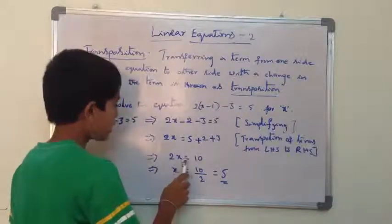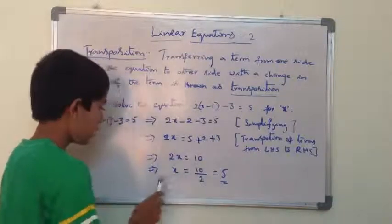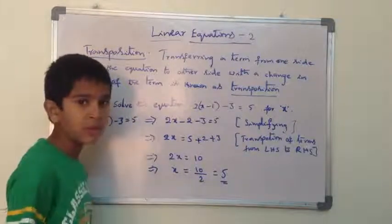It implies 2x = 10, which implies x = 10/2 = 5.